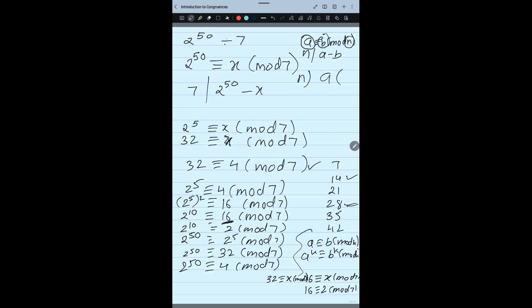So my answer is, since I reached here, I can say when 2 to the power 50 is divided by 7, then the remainder will be 4. So this is how we do the question. We will do few more questions in the next video. Thank you.